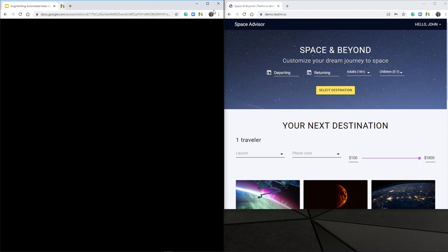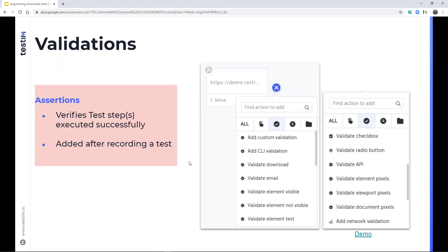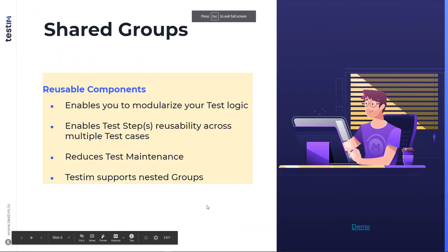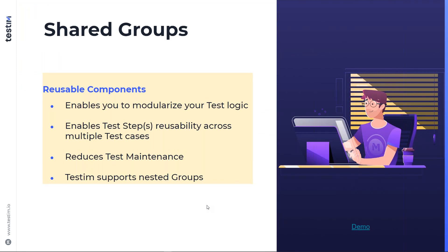Let me save my test and return to my presentation. The next concept is groups or reusable components. Testim allows you to reuse certain steps as shared components — shared groups that can be reused across multiple different tests. A quick example is the login scenario: you don't want to record your login steps and validation every time. You can create a shared group that modularizes your test logic and reuse it across multiple tests. This cuts down maintenance, reduces clutter in your test editor, and helps with reusability. Testim also supports nested groups.